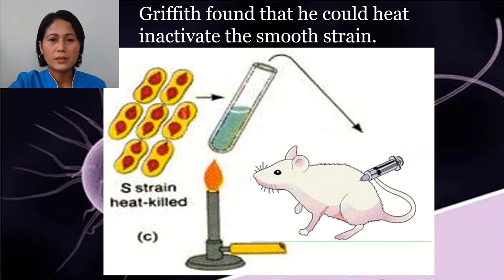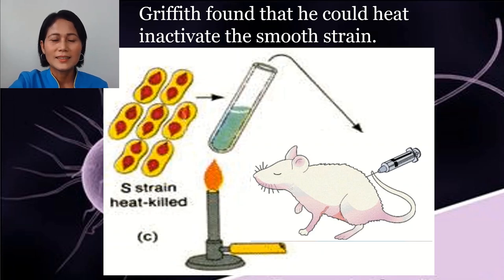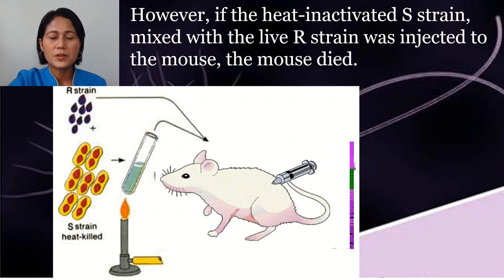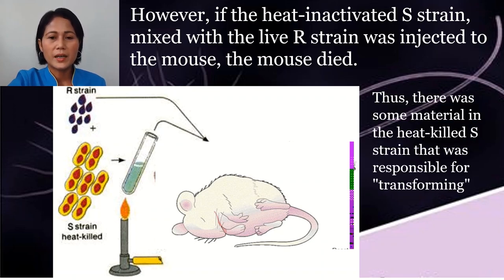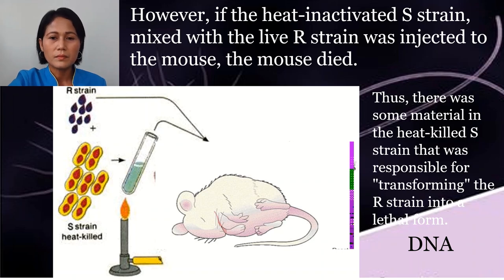Friedrich Griffith found that he could heat-inactivate the smooth strain. When the smooth strain was subjected to heat before being injected into the mouse, the mouse did not die. However, if the heat-inactivated S-strain was mixed with a live R-strain and injected into the mouse, the mouse died. This means that there was some material that the heat-killed S-strain left in the environment that was responsible for transforming the rough strain into a lethal one.